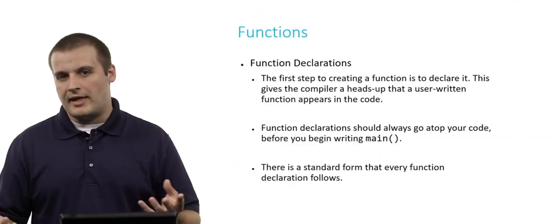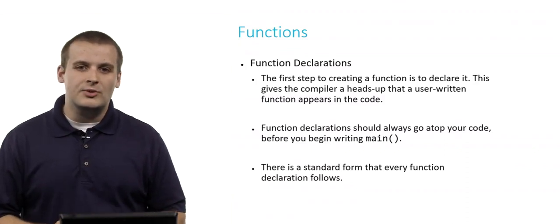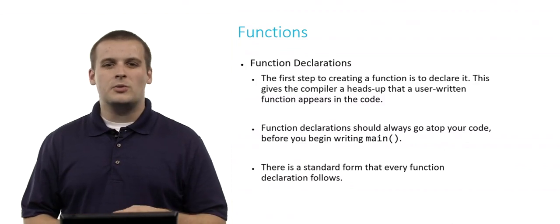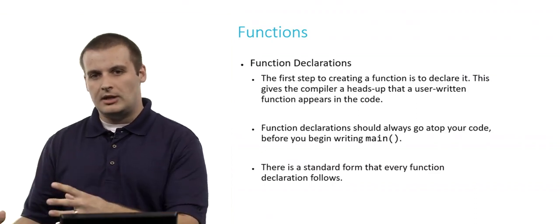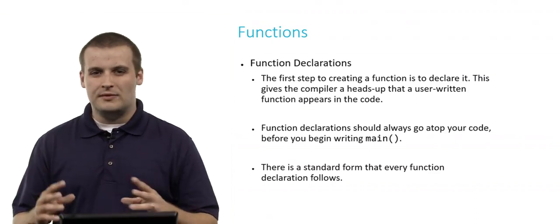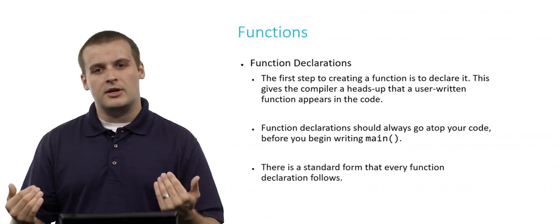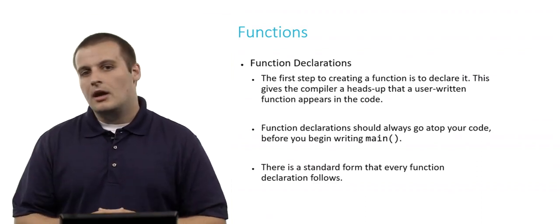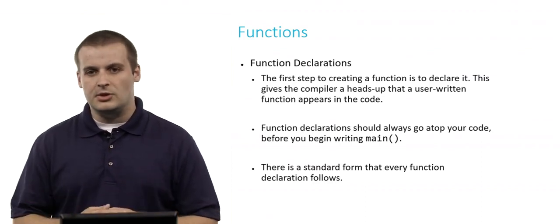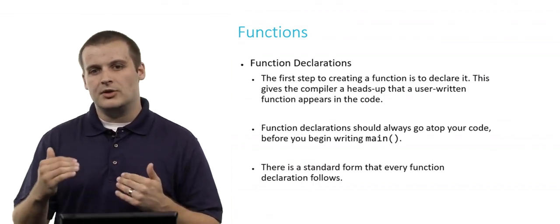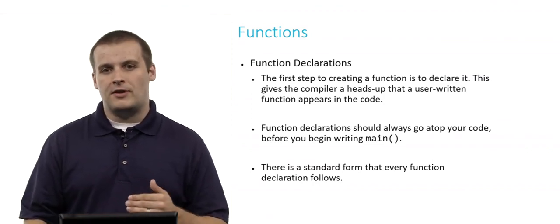All right, so functions are great. Now let's start writing them and getting them into our programs. In order to do that, the first thing we need to do is declare the function. When you declare a function, you're basically telling the compiler: I am going to be writing a function later on and here's what it's going to look like. Function declarations generally should be placed at the very top of your code, right before you start writing main, so that others can understand and make use of them.